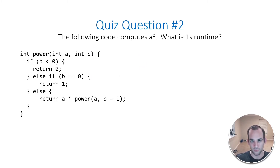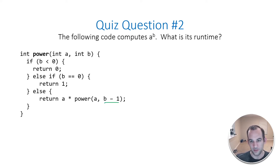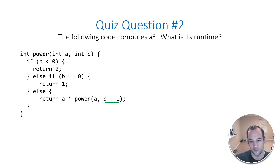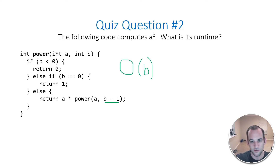Okay, so question number two. The following code computes A to the power of B — what is its runtime? So we have some if statements here, and this is recursion as you can tell. We don't care about the two base cases. We're just worried about the return: A times power(A, B minus 1). So this B minus 1 is the key. Since that's what's being decremented and all the base cases revolve around the B input, this recursion being called is based on the input of B. So whatever B is, that's how many times the power method is going to be recursively called. So the answer is O(B).